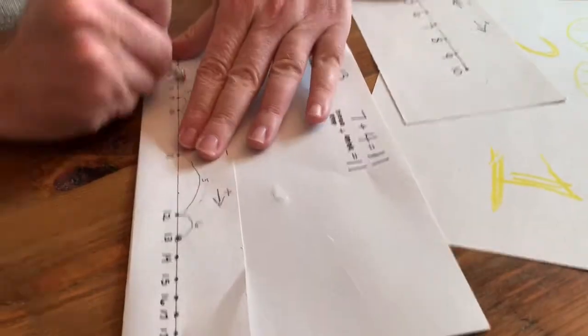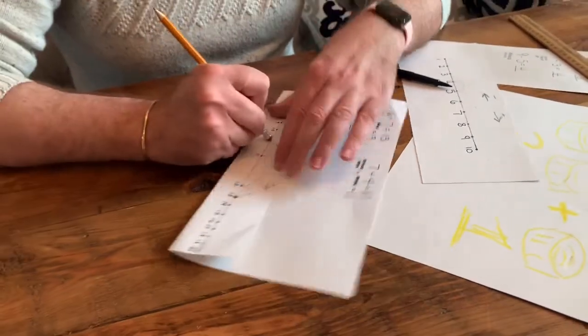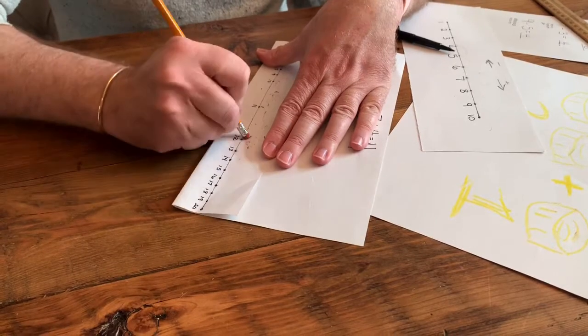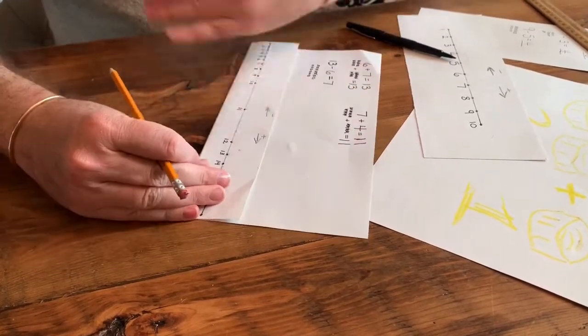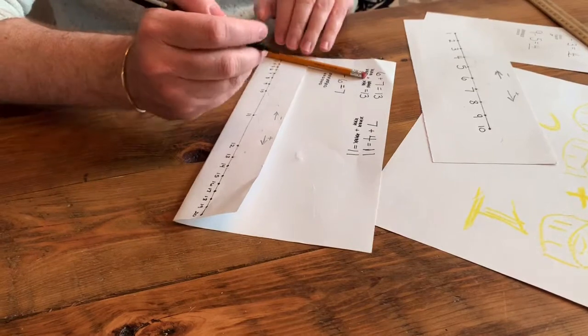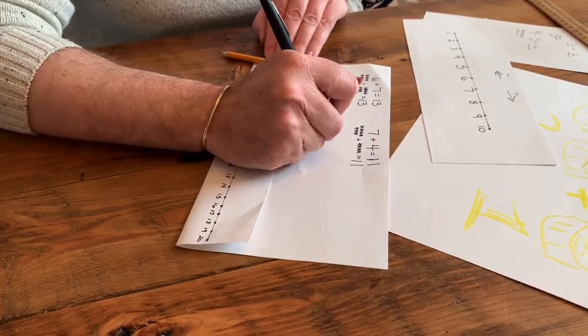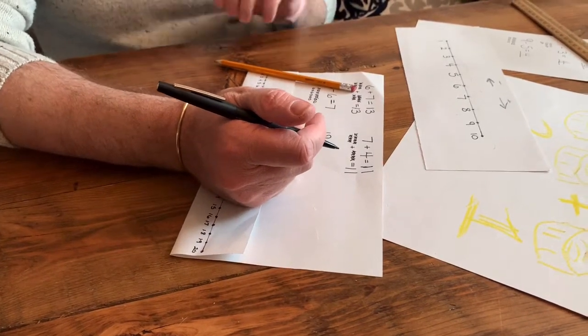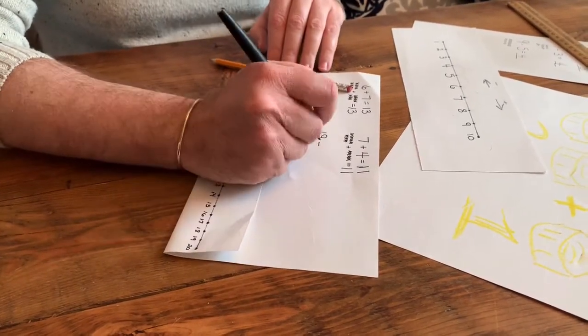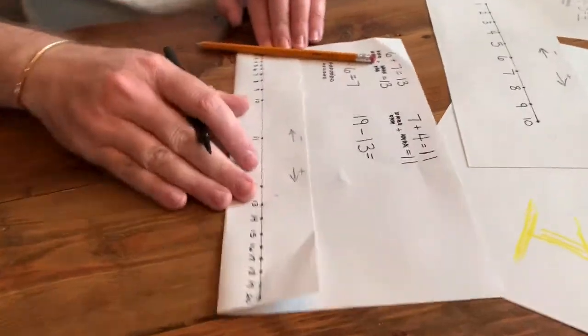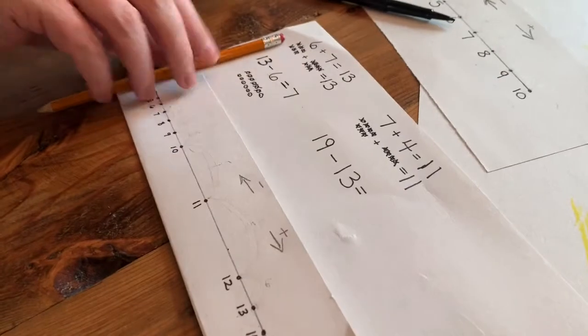So let's do one more. Can someone shout out a new number for me, please? Between 10 and 20. 23 is not between 10 and 20. Try again. 19. Good. And give me any number 1 through 20. 13. Good. That's going to be a lot of counting, which is good. I like that. All right. Thank you for those numbers.